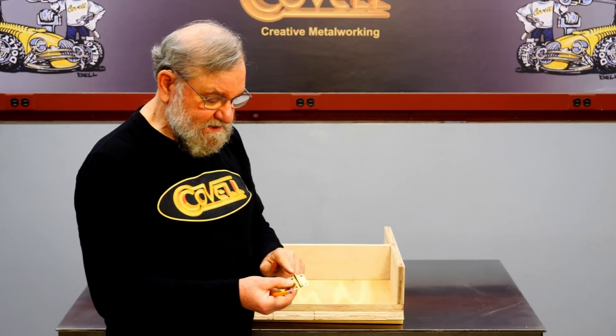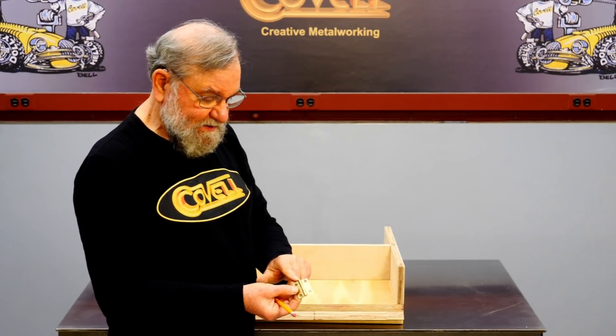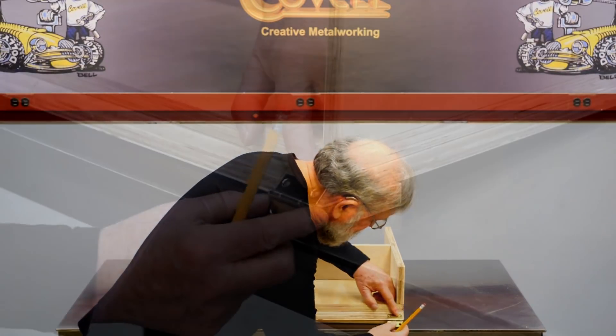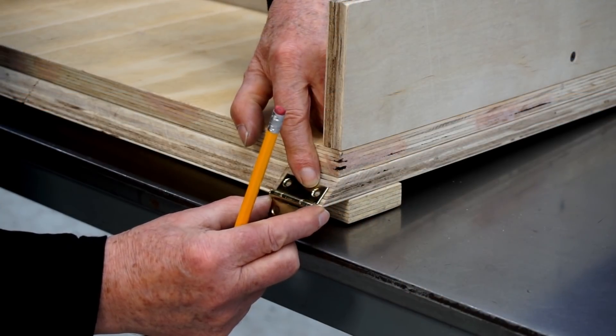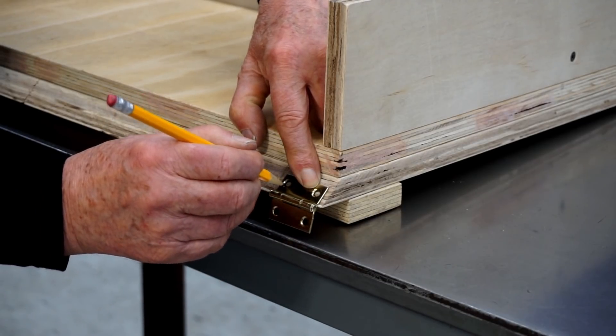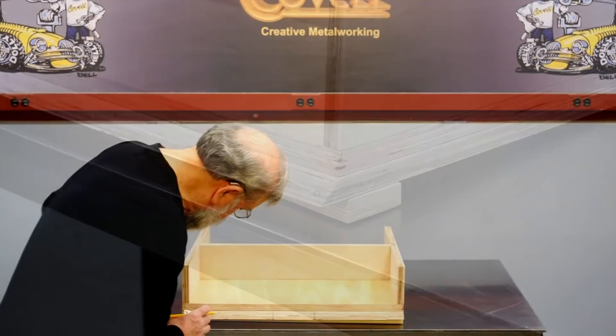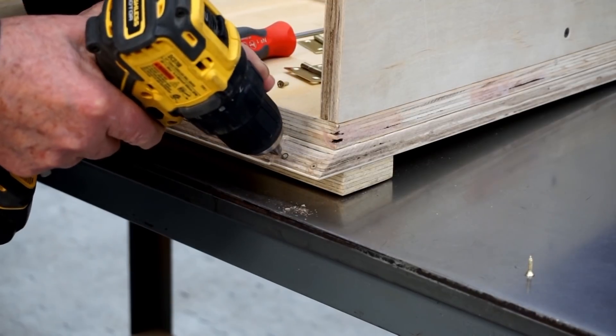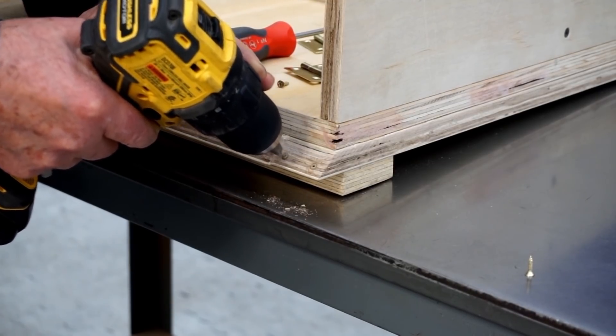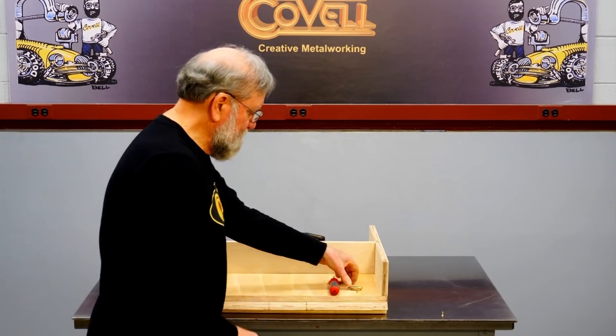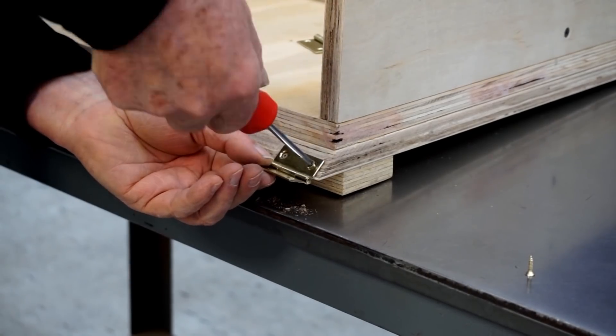So to locate the hinges, I'm going to hold it in place so the center of the hinge pin is right on this edge. I'll put this carefully into place, and then mark the holes with a pencil. I'll do that on both sides. So now I'll drill pilot holes for the screws. And now I can screw the hinge plates into place.